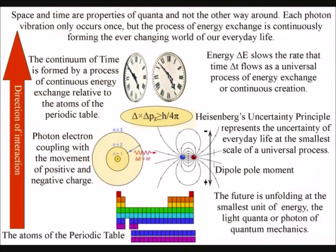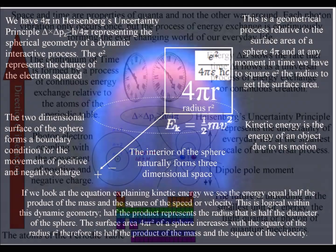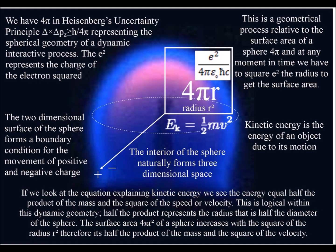The interior of a sphere is naturally three-dimensional, and the spherical two-dimensional surface will form a boundary condition for positive and negative charge. Because the process is relative to the spherical surface, we have to square the radius.